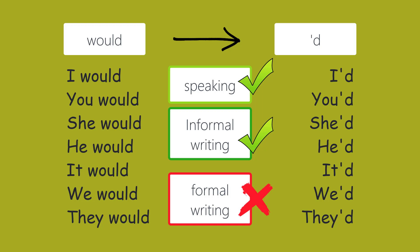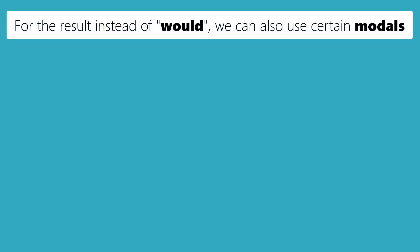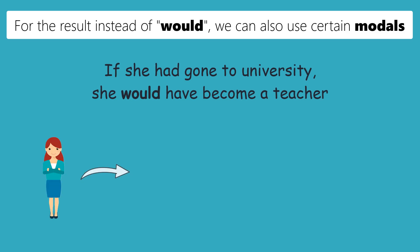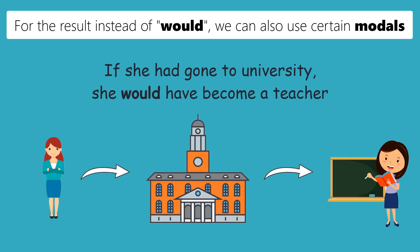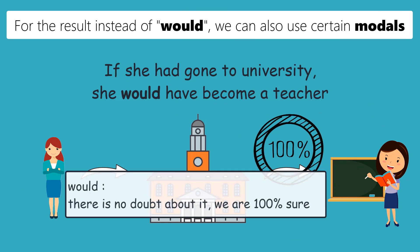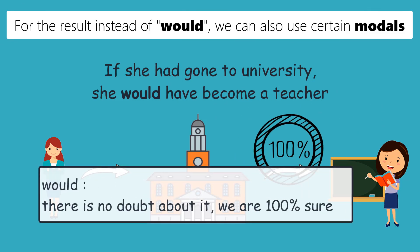One important point to mention is that, for the result, instead of would, we can also use certain modals. Pay attention to these examples. If she had gone to university, she would have become a teacher. This means it is certain that she would have become a teacher — there is no doubt about it. We are 100% sure.